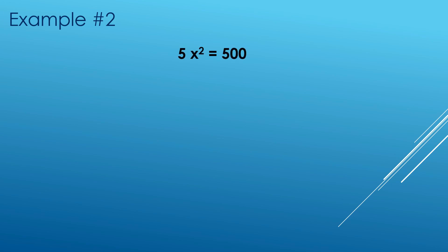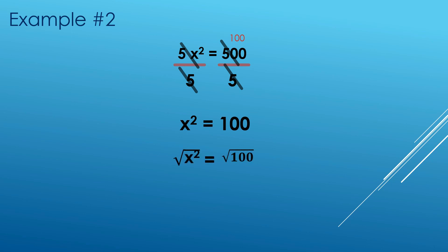The given example is 5x squared equals 500. We need to isolate the quadratic term, so we remove its coefficient of 5 by dividing both sides by 5. After simplifying, we get the square root of both sides. The square root of x squared is x, and the square root of 100 is 10. Since 100 is greater than zero, there are two possible solutions: positive and negative 10.